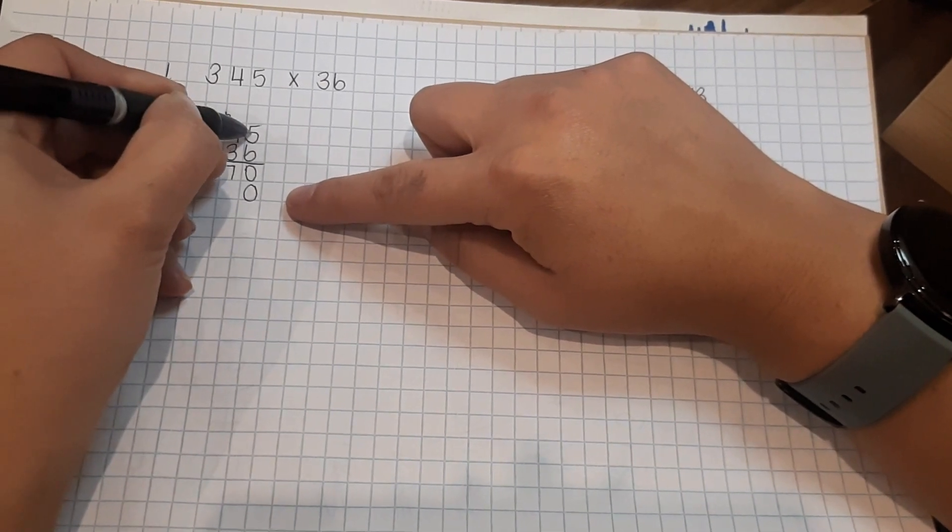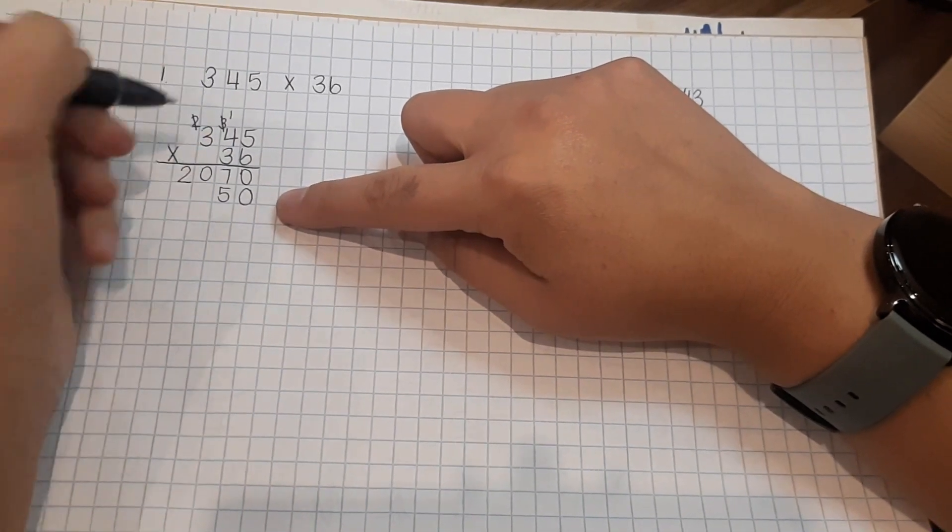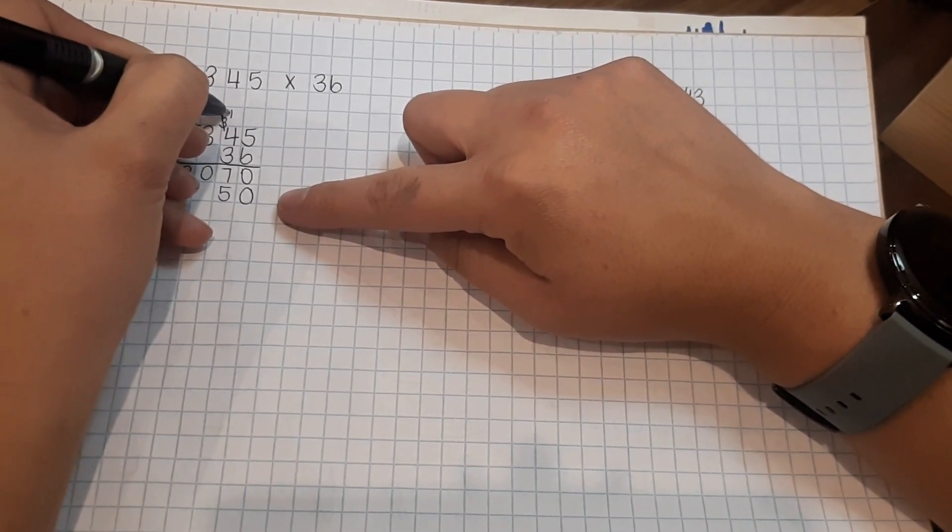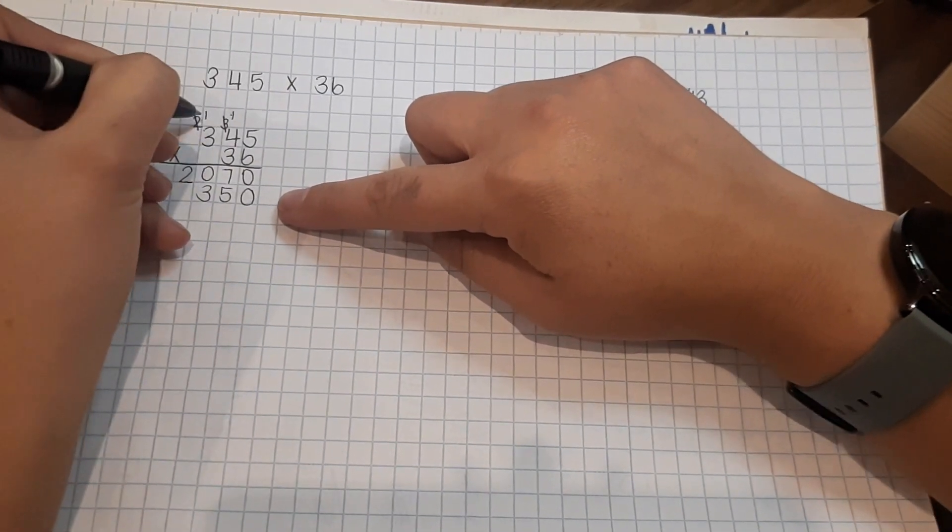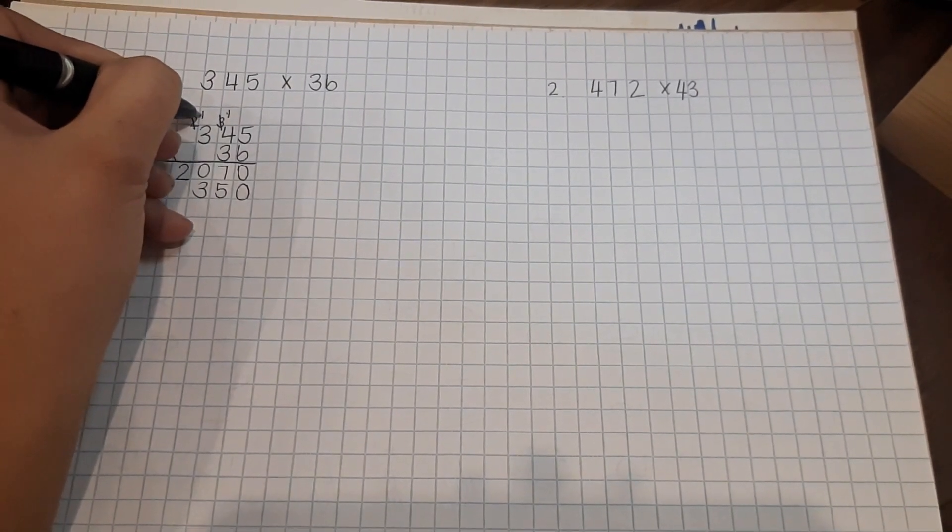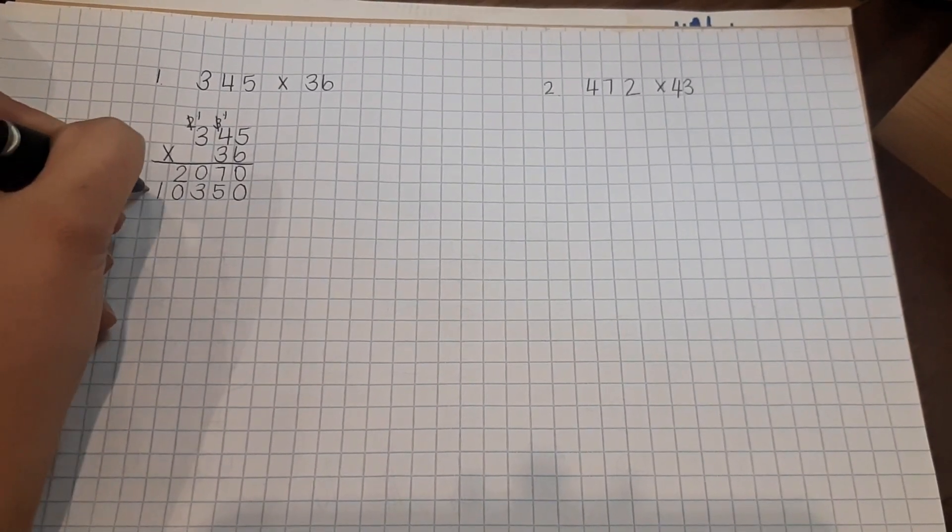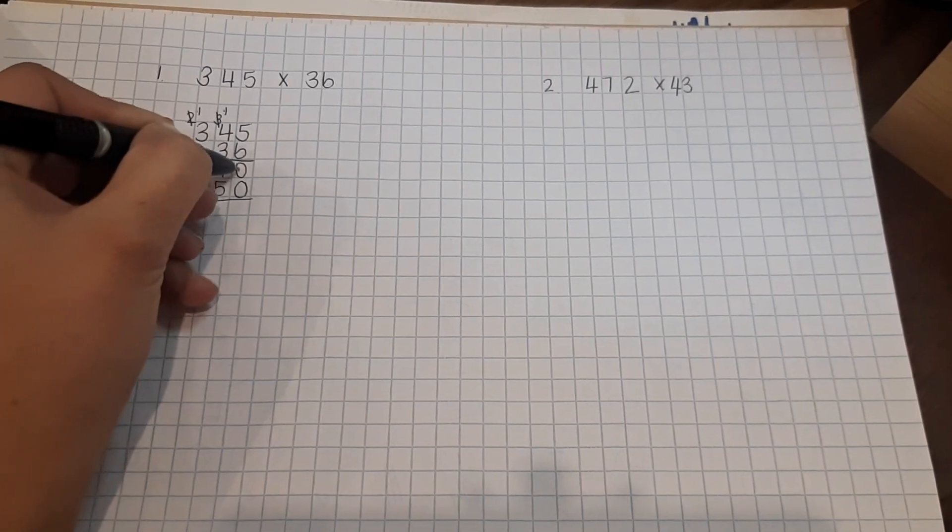Remember we write the 0 because we are multiplying with a multiple of 10. Now 3 times 5 is 15, 3 times 4 is 12 plus 1 is 13, and then 3 times 3 is 9 plus 1 is 10.